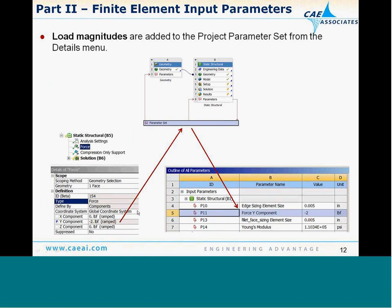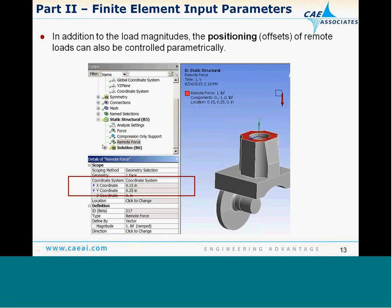For load magnitudes: any vector or component-based load entered as a constant value will have an option to click on the box to the left, adding it to the parameter set as an input parameter. In addition, for remote type loads — remote displacements and remote forces — we can also designate XYZ offsets from a specified coordinate system for the location of that remote point. These XYZ offsets are also parametric, allowing us to study sensitivity as the load is moved in a particular direction.